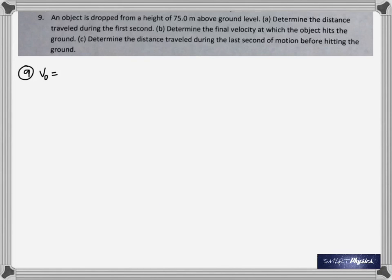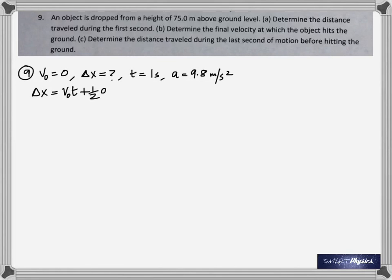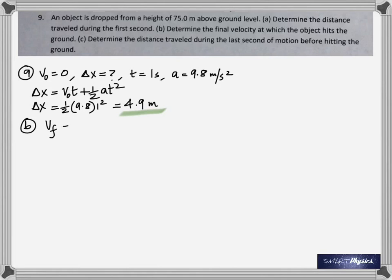Number 9: an object is dropped from a height of 75 meters above the ground. Find the distance traveled during the first second. It's dropped so initial velocity is 0. Time is 1 second, acceleration is 9.8 m/s². Plug into the kinematic equation and be careful when reading the problem — write down all the given quantities. For part b, find the final velocity at which the object hits the ground.